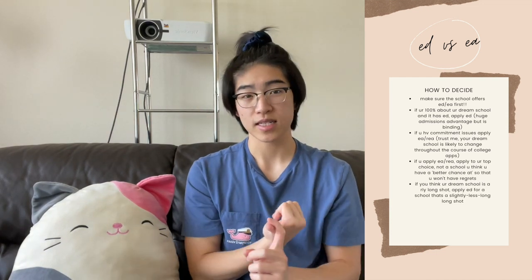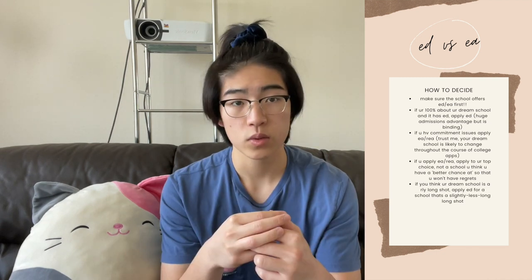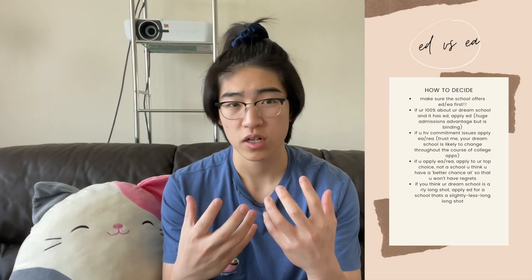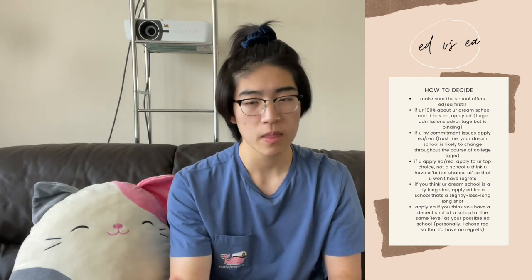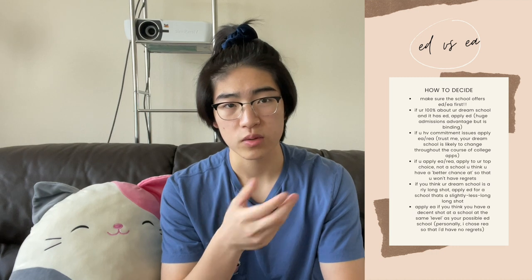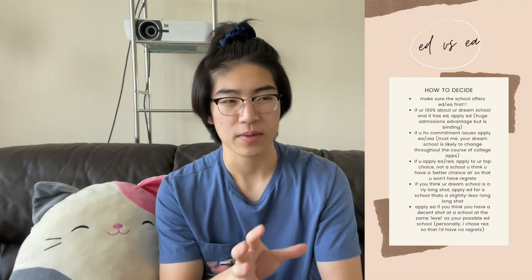The tricky part is if you don't know whether to apply ED or EA. If you think your reach schools or your dream school is a really long shot, then apply ED — like if you really like UPenn, UChicago, or Columbia. Now if you feel even somewhat confident that you can land a school at the same level as your possible ED school, then I would not apply ED. My personal preference is to take the risk of going for a higher choice. But overall, definitely apply somewhere early because there's definitely an advantage and it'll make you a lot less stressed in the spring.